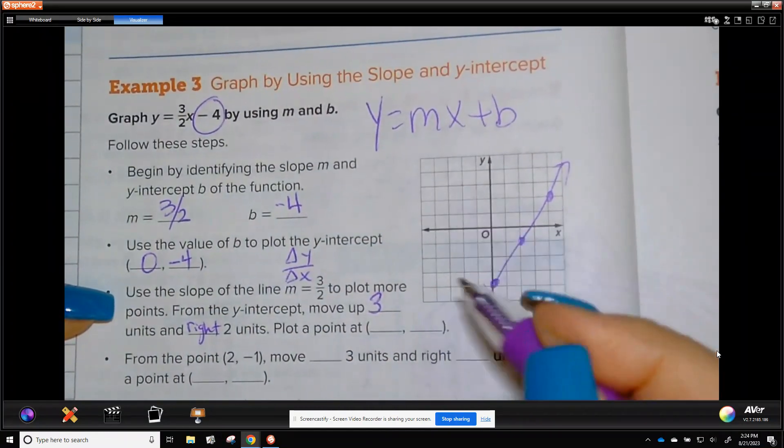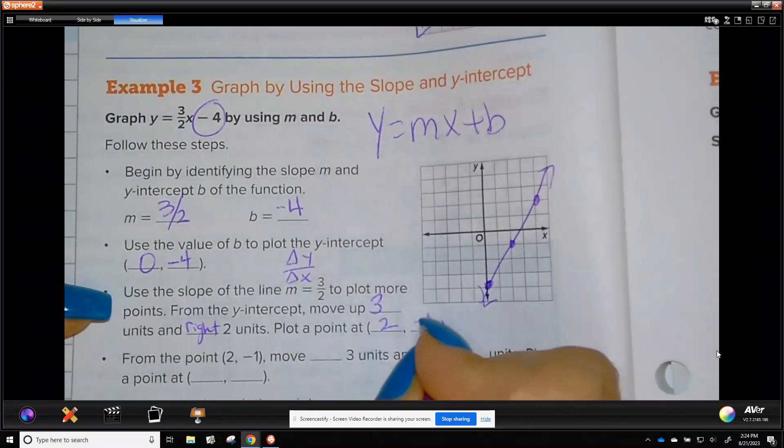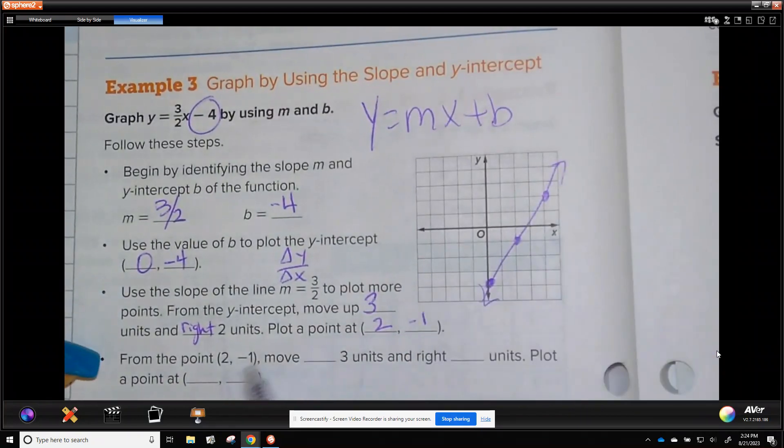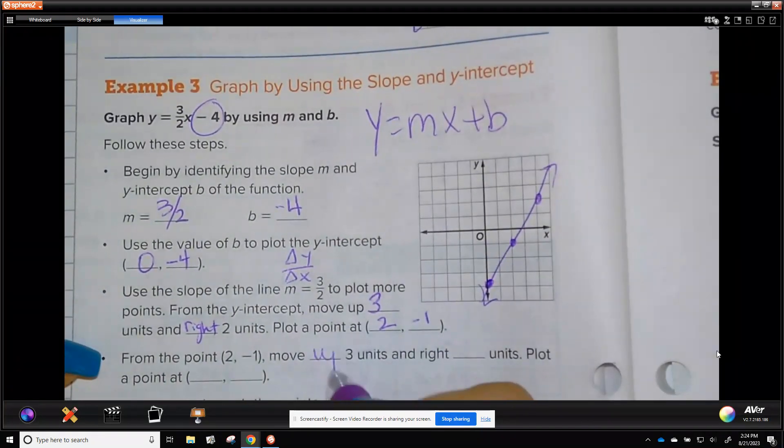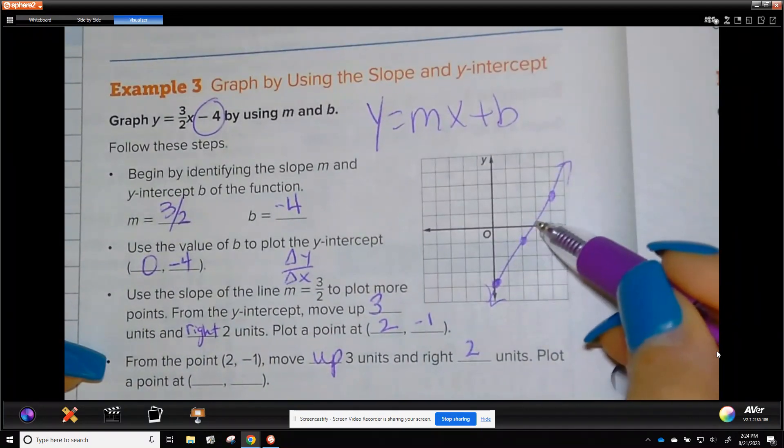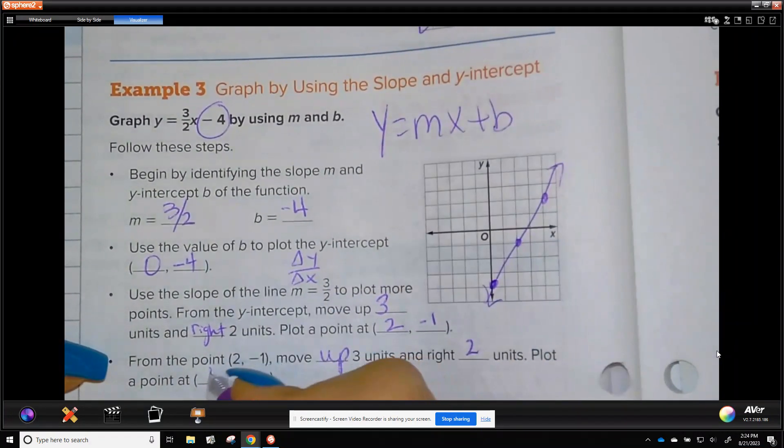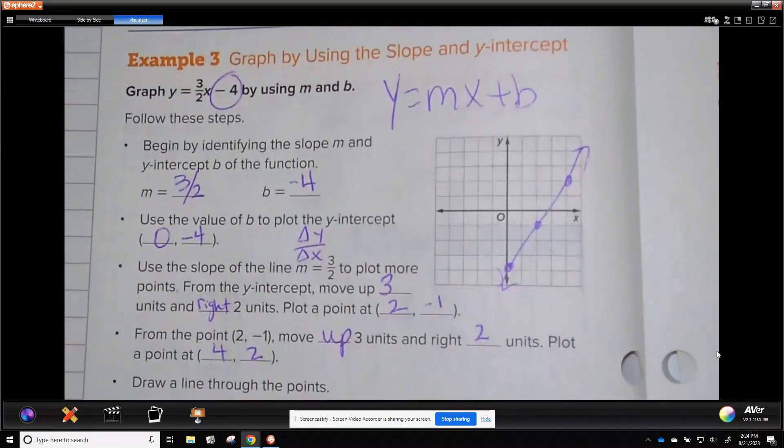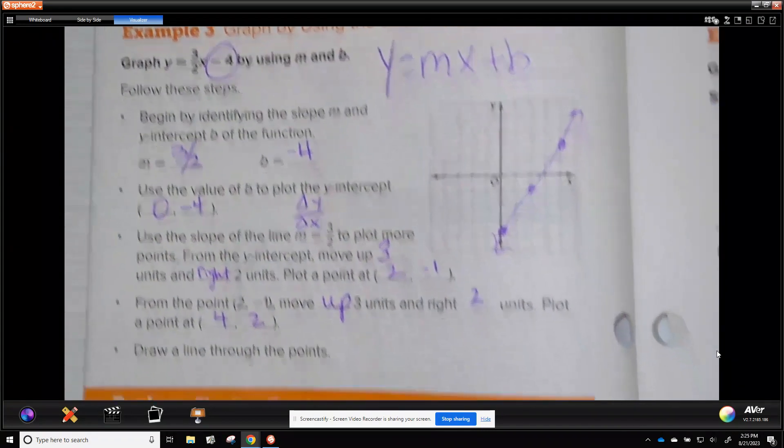That's what they are doing. From the y intercept, move up 3 and right 2. And plot a point at 2, negative 1. And then from 2, negative 1, move up 3, right 2. And put a point on 4, 2. And draw your line.